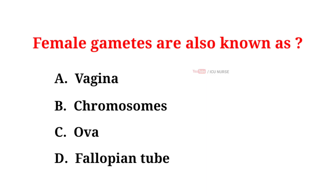Female gametes are also known as: A. Vagina. B. Chromosomes. C. Ova. D. Fallopian tube. The correct answer is C: Ova.